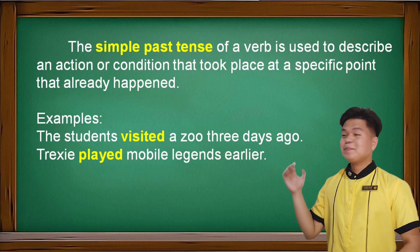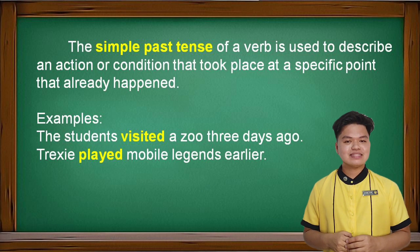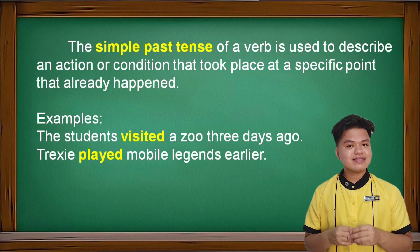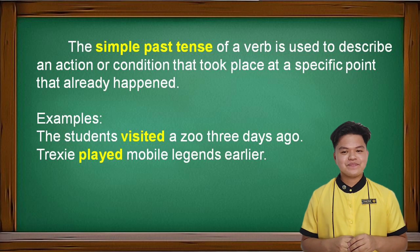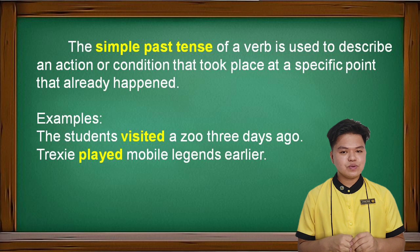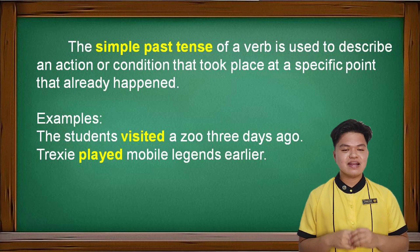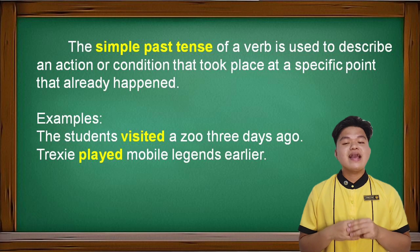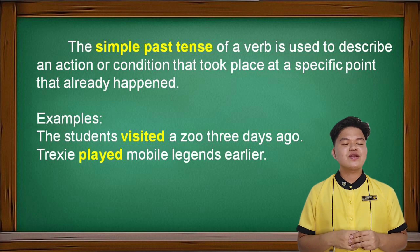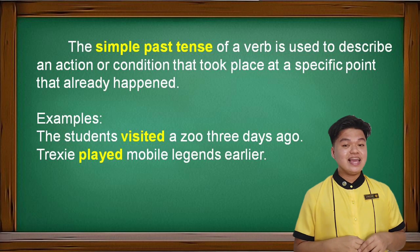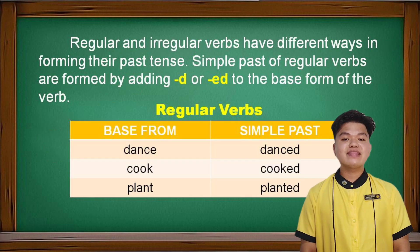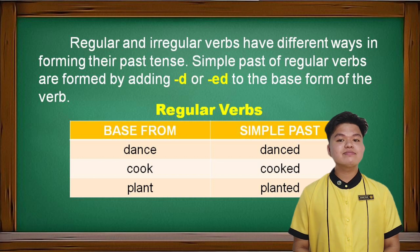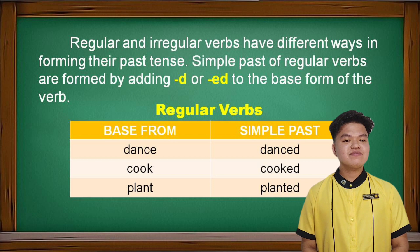The first one is simple past tense. The simple past tense of a verb is used to describe an action or condition that took place at a specific point that already happened. For example: the students visited a zoo three days ago — 'visited' is the simple past tense because it already happened. Trexy played mobile legends earlier — 'played' because it already happened. Regular and irregular verbs have different ways in forming their past tense. Simple past tense of regular verbs are formed by adding -d or -ed to the base form of the verb.